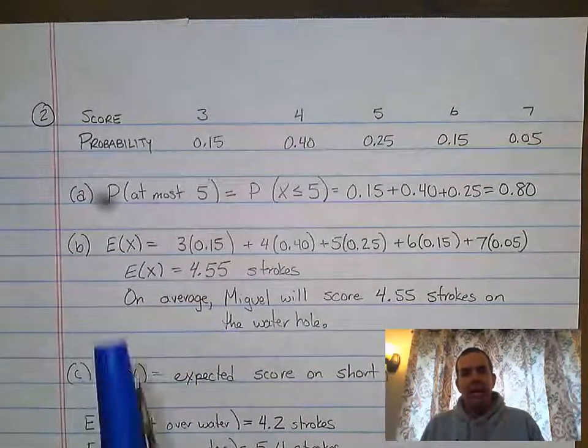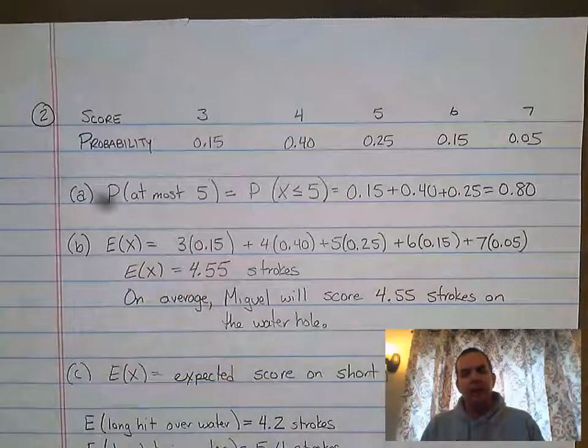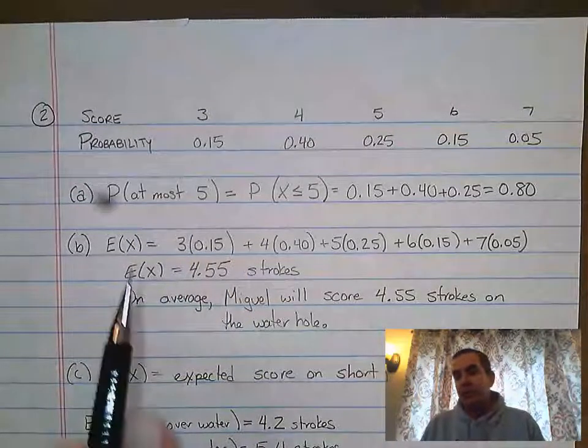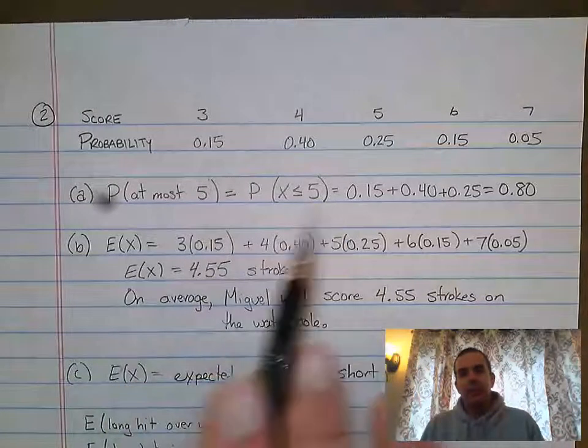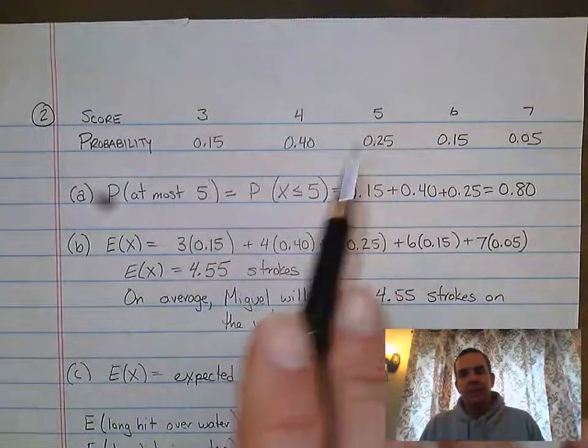Part a actually asks you to find the probability of at most five. At most five means five or less, so it means this column, this column, and this column - the three, four, and five column.